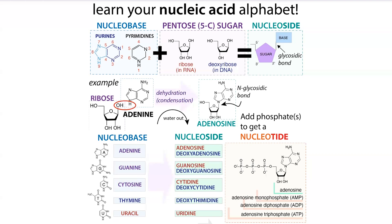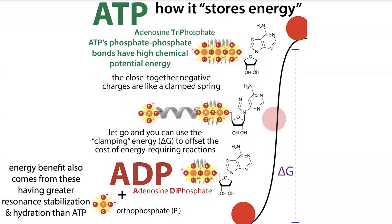Going back to thinking about nucleotides having a T, like energy, that takes us to thinking about the nucleotide you probably think about the most: ATP, or adenosine triphosphate, which cells use as a kind of global source of energy. As mentioned, those phosphate groups have a lot of energy.